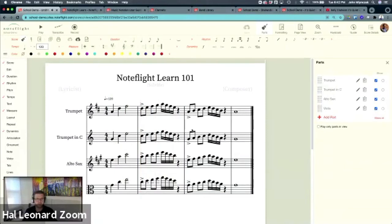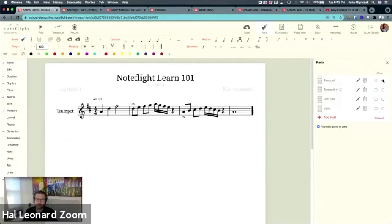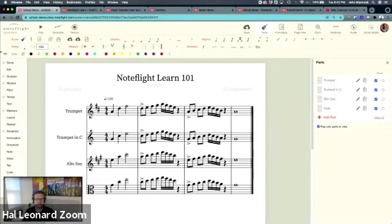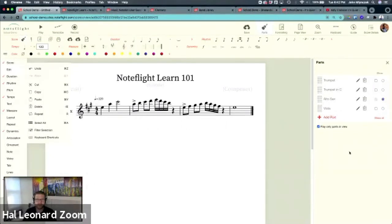Now it's playing back the full score. You can also select play only parts in view, which allows you to do exactly what it says, play only parts in view. So I'm viewing all parts now, but notice in the parts panel, you can select which individual part you want to see. So if you wanted to send this to your students, you could send them the full score and the student can say, well, I play alto sax. So the student only plays alto sax with play only parts in view enabled.